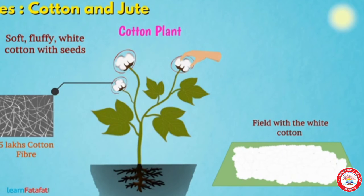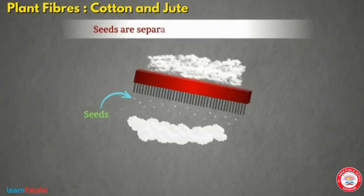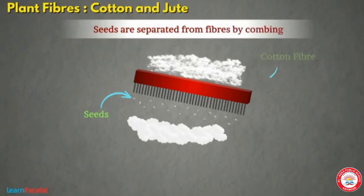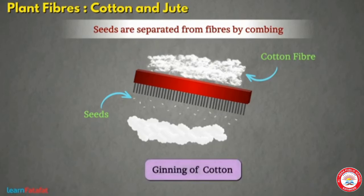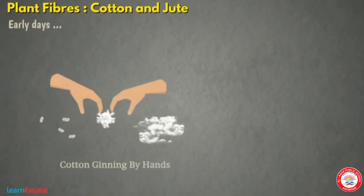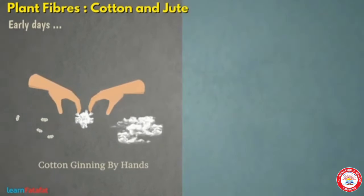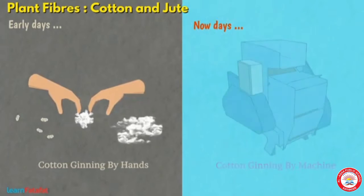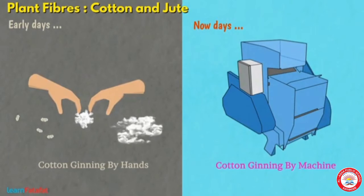Fibers are then separated from the seeds by combing. This process is called ginning of cotton. Ginning was traditionally done by hand, and these days machines are also used for ginning.